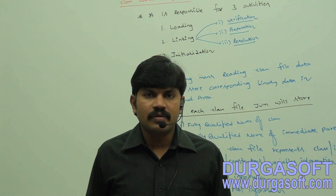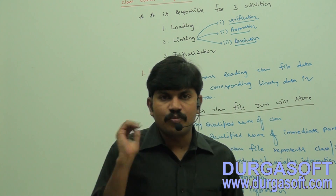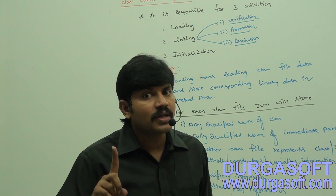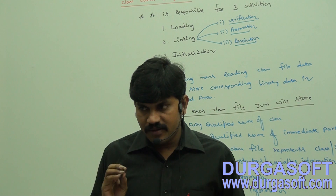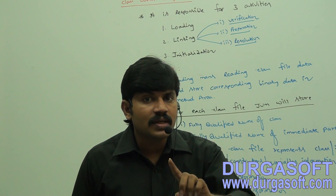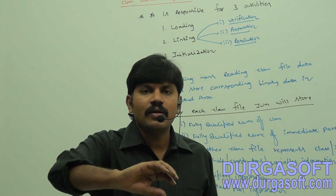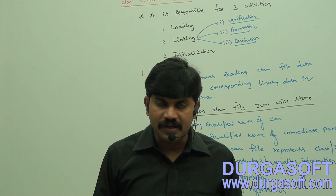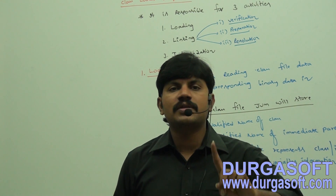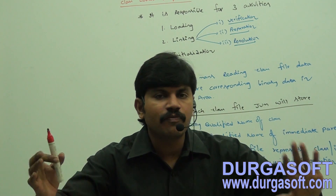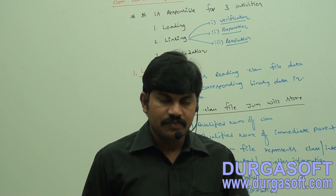We covered the basic architecture diagram of JVM. The first component is the class loader subsystem, and now we have to perform a post-mortem on that component. The name itself indicates its purpose — this system is responsible for loading dot class files. Class loader subsystem is mainly responsible for three activities.